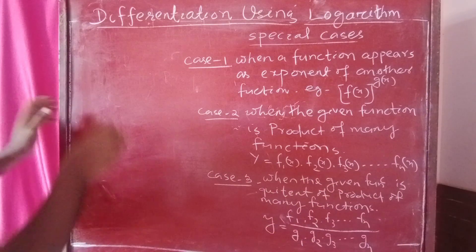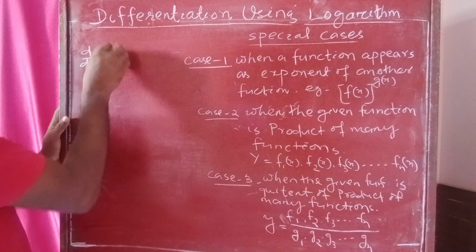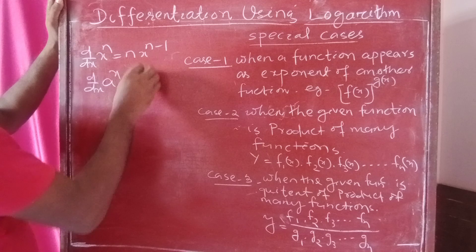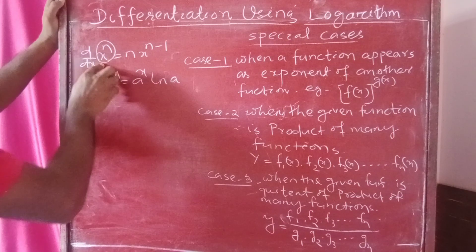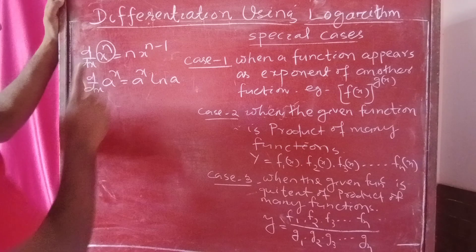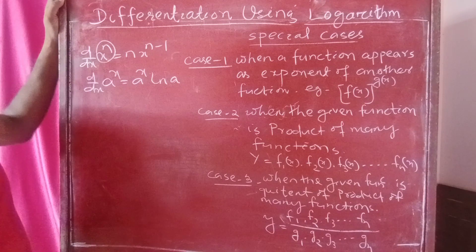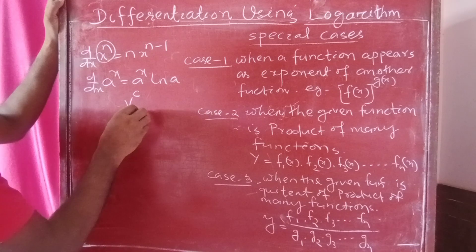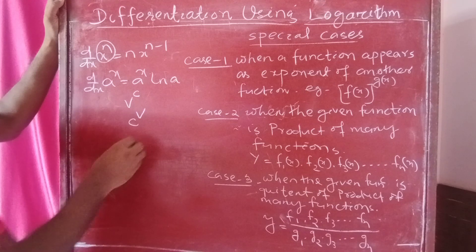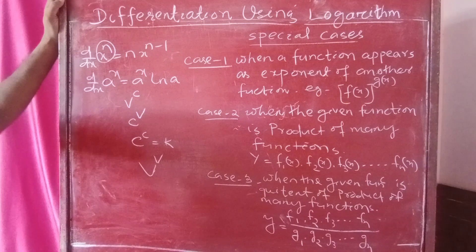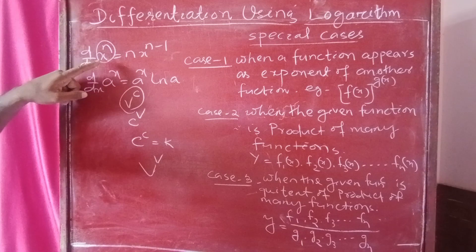I am going to take a formula. The derivative of x to the power n is n into x to the power n minus 1. The derivative of a to the power x is a to the power x into ln. So if you look at it, there are four combinations: variable to the power constant, constant to the power variable, constant to the power constant, and variable to the power variable.